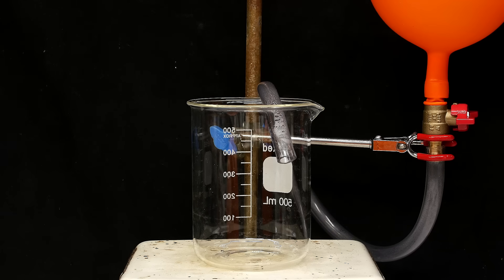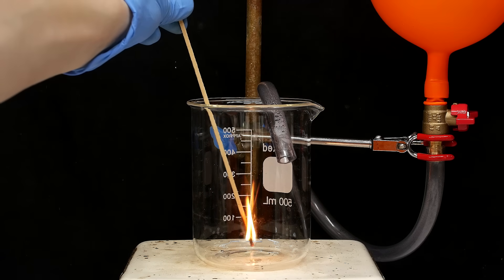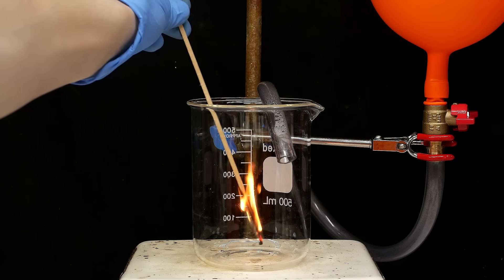Now, to see if I even have nitrous oxide, I'll just do a quick burning splint test. The first one is just a control, and nothing's been added to the beaker, so it's just a regular burning piece of wood.